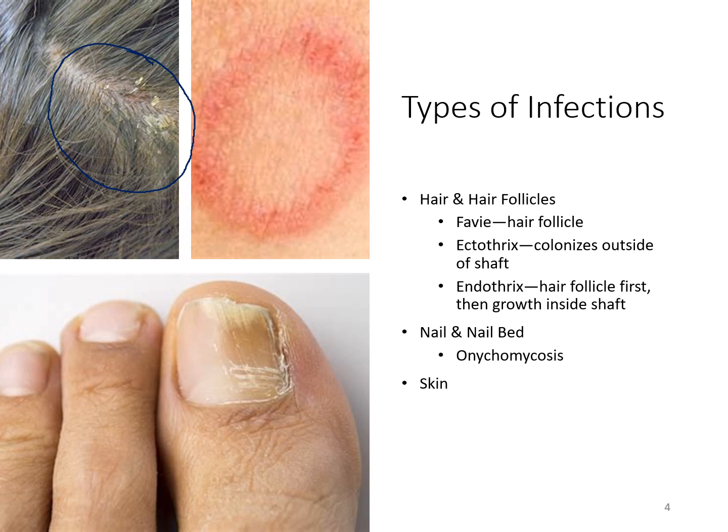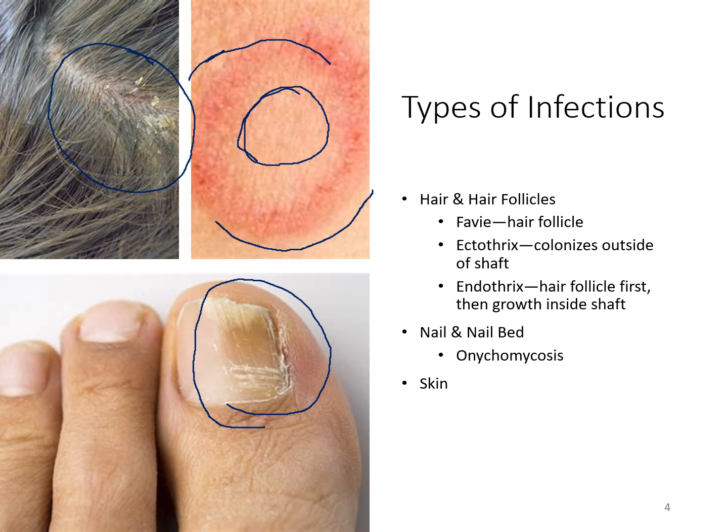Infections of the nails include fingernails and toenails. You can see an infection where it has infected the toenail and around the edges of it in the skin. Infections of the skin are typical with this ringworm appearance — the organism is around the outside edge, but the inside has a clearing where the organism has worked its way out and is actually healed and no longer infected.